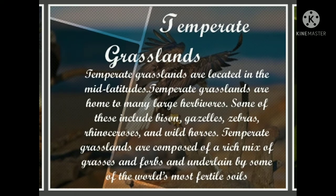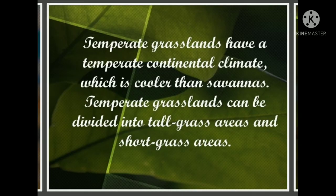Temperate grasslands are located in the mid latitudes. They are home to many large herbivores, including bison, gazelles, zebras, rhinoceroses and wild horses. Temperate grasslands are composed of a rich mix of grasses and forbs, underlain by some of the world's most fertile soil. They have a temperate continental climate, which is cooler than the savannas, and can be divided into tall grass areas and short grass areas.